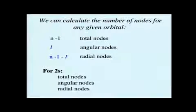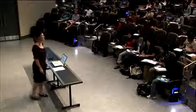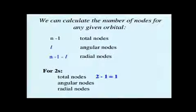For a 2s orbital, how many total nodes will we have? Yep, I heard one. So two minus one, one total node.